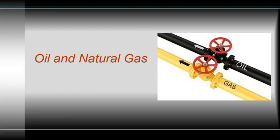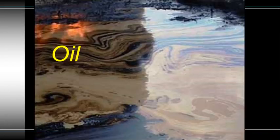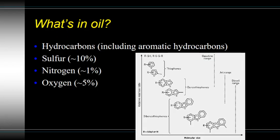Hello and welcome back to AP Environmental Science. Today I want to talk about the fluid fossil fuels, which would be oil and natural gas. Oil is the liquid fossil fuel we use — petroleum — and like coal and natural gas, it consists of lots of hydrocarbons. Many of these are not just chain hydrocarbons but also aromatic hydrocarbons, which are rings.